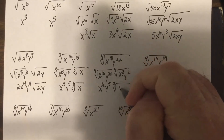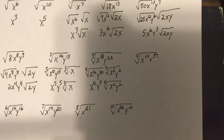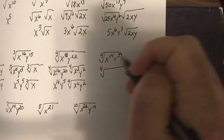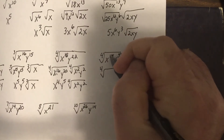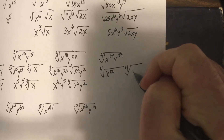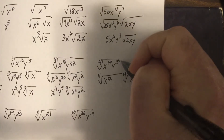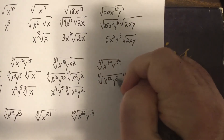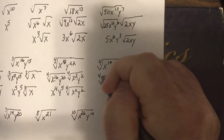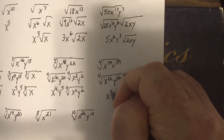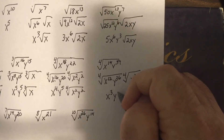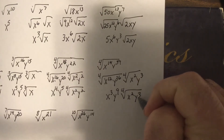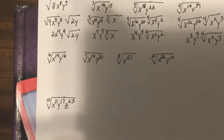Another 4th root problem: for X to the 14th Y to the 39th, 14 is not divisible by 4 so we go down to 12, leaving X squared as the remainder. For Y to the 39th, we go down to 36, leaving Y cubed as the remainder. Dividing the perfect-4th-power parts by 4 gives X cubed Y to the 9th, with the 4th root of X squared Y cubed left over.